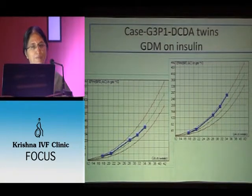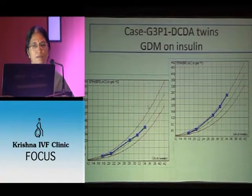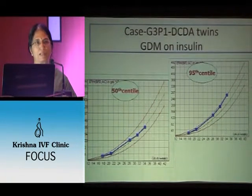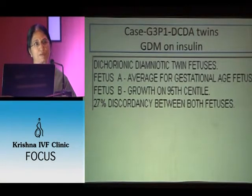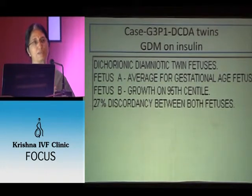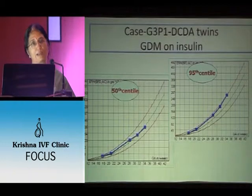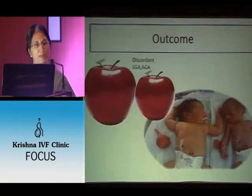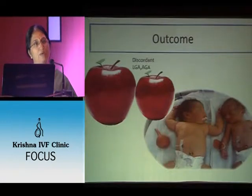Another example: a gravida 3 para 1 with DCDA twins, GDM on insulin. Fetus 1 is on the 50th centile (AGA), fetus 2 is on the 95th centile (LGA). They are discordant at 27%. But it is not just the difference that is important — it is how the babies have been growing. This baby is large; they are different because one is LGA and the other is AGA. There is 27% discordancy, but looking at individual growth, both are growing very well.